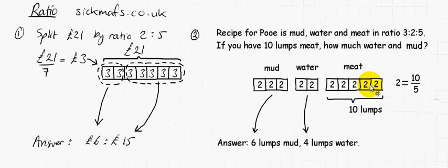So 1 part of the ratio equals 2 lumps, and so 2 parts of the ratio, which is the water part, is here, and so 2 parts is equal to 4 lumps of water.